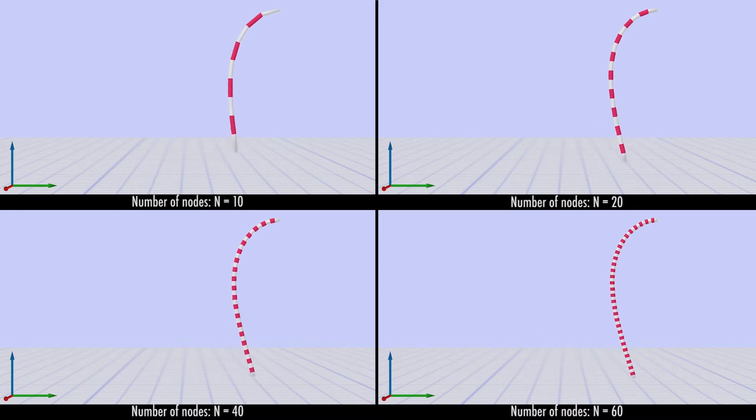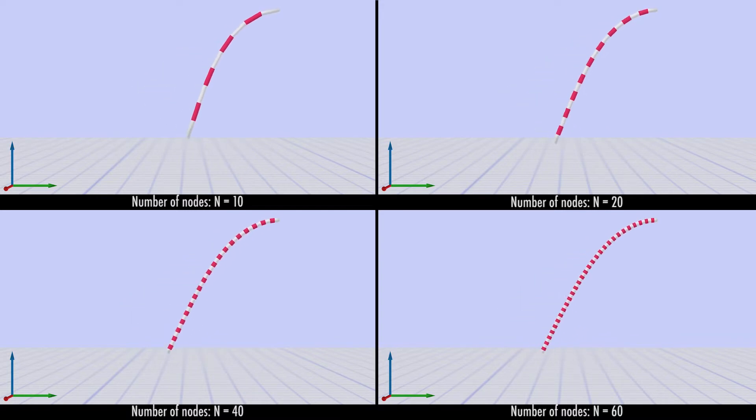For an initial orientation angle of zero, we repeat the simulation using different numbers of nodes connected by segments discretizing the individual rods.